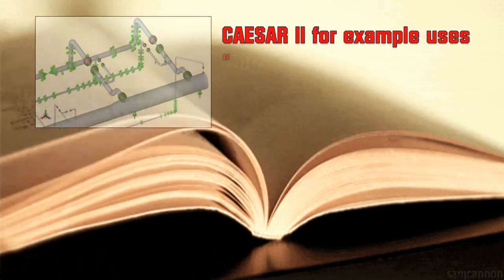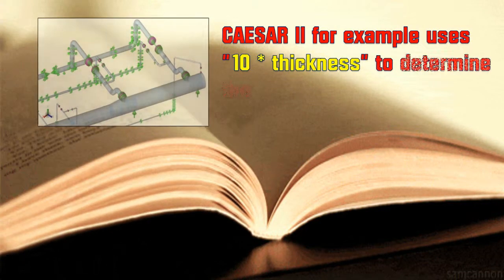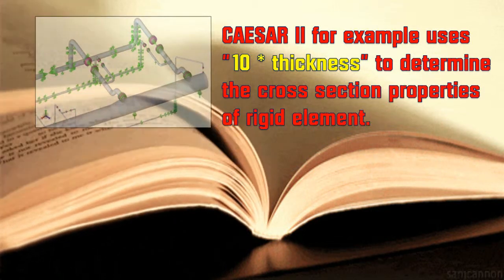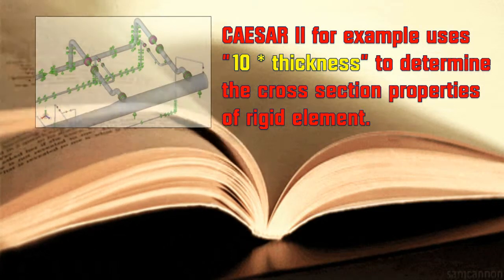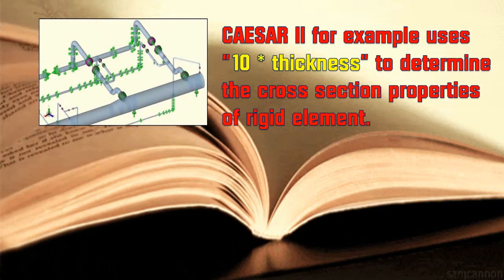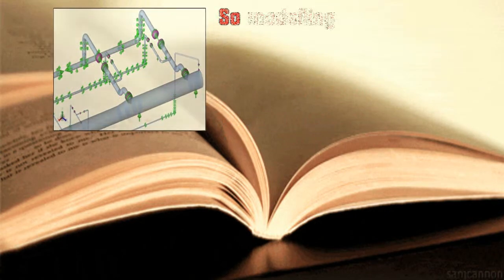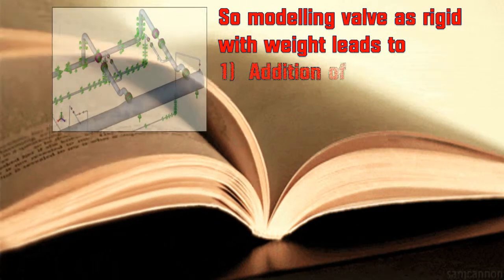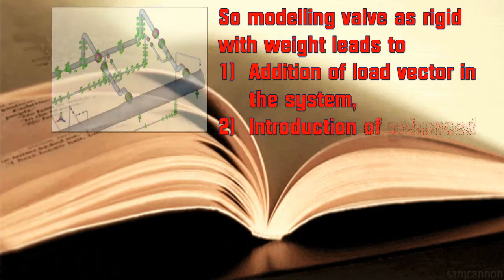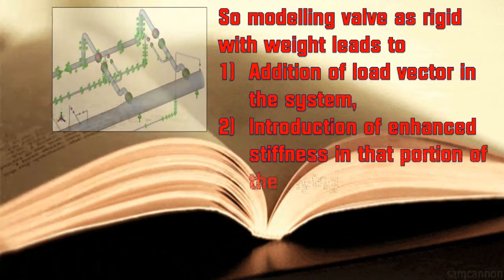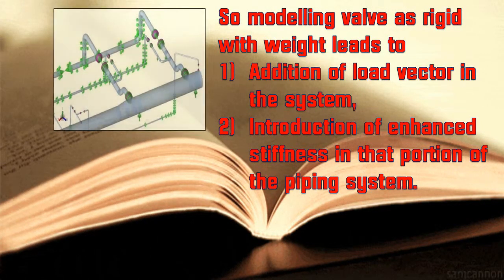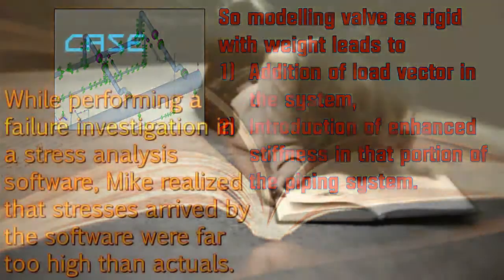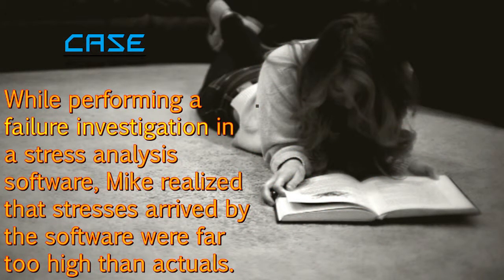Caesar 2, for example, uses 10 times the thickness to determine the cross-section properties of a rigid element. So modeling a valve as rigid with weight leads to: one, addition of a load vector in the system; and two, introduction of enhanced stiffness in that portion of the piping system.